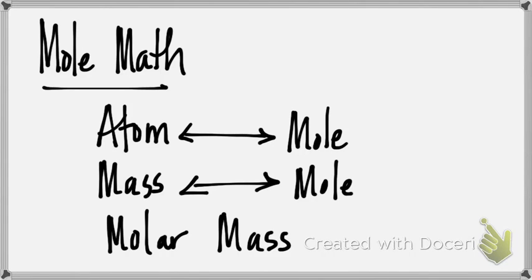This section is on how to do the five problems associated with the mole. There are five different types of problems. You have atom to mole and then mole to atom. The arrow shows going both ways, so atom to mole and mole to atom are related, they are opposites of one another.